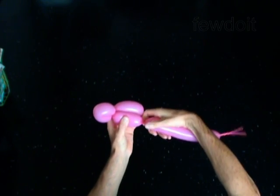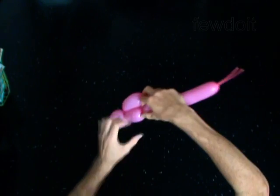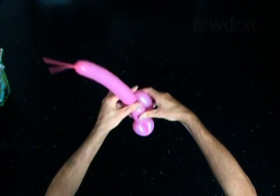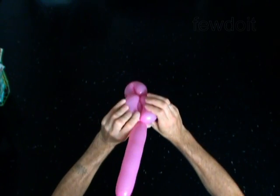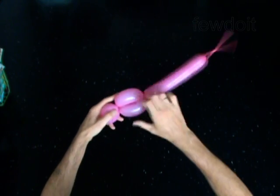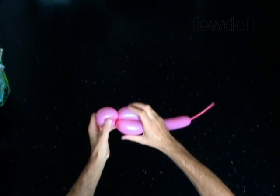Twist the fourth 4-inch bubble. Lock the free end of the fourth bubble between the third and the second bubbles. Just roll the third and the second bubbles around the fourth bubble. You have made the body of the ladybug.